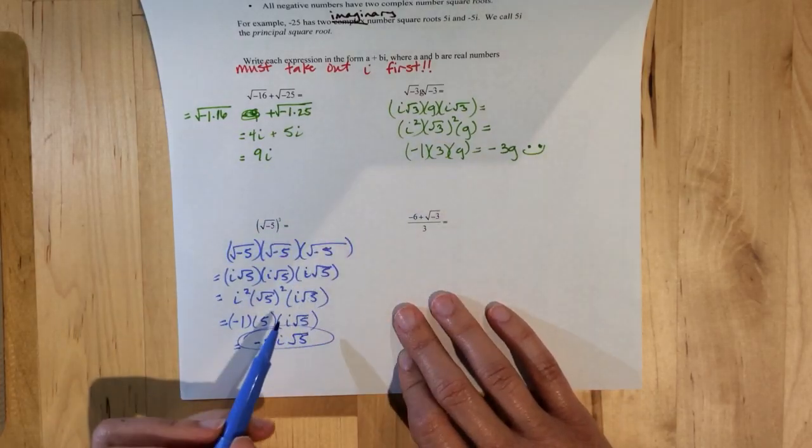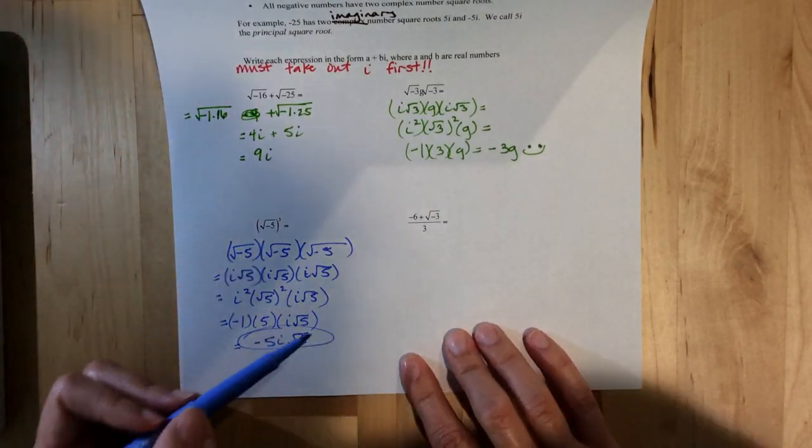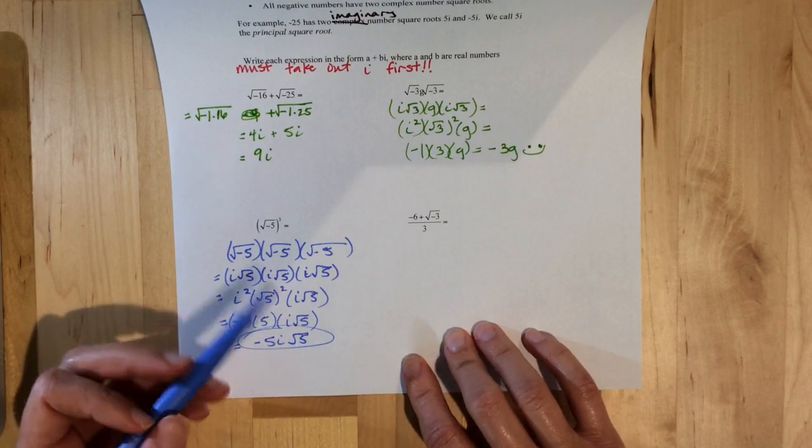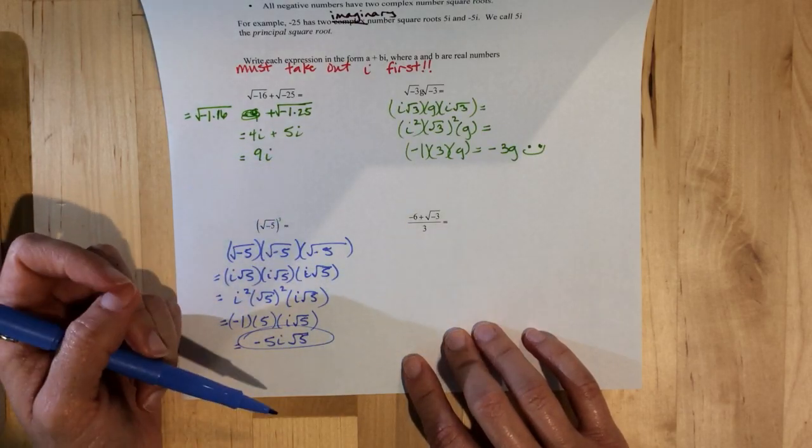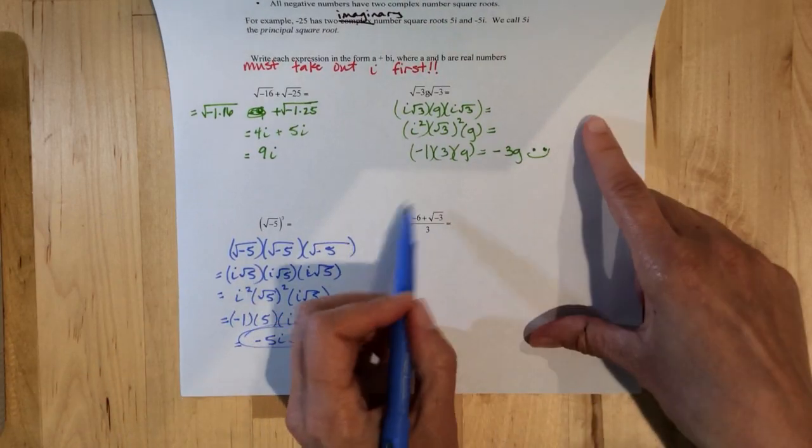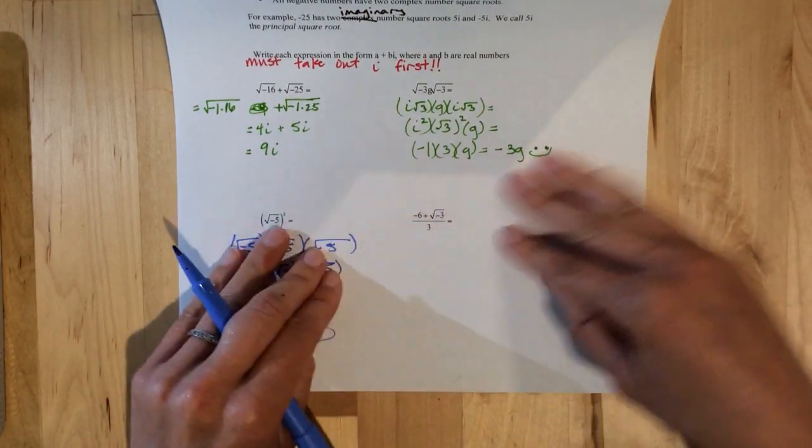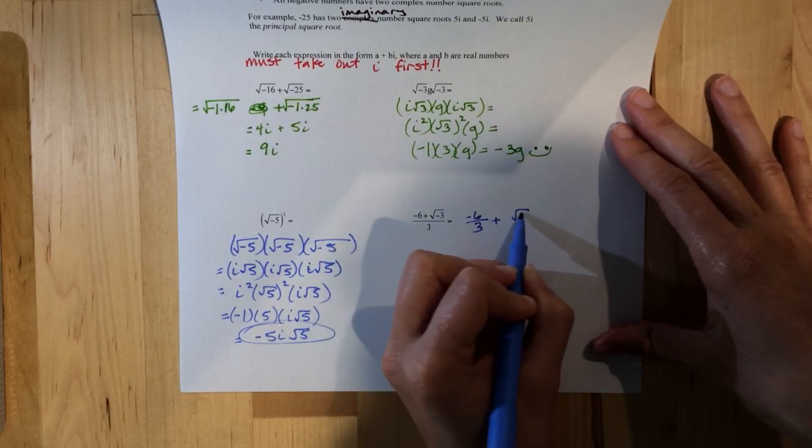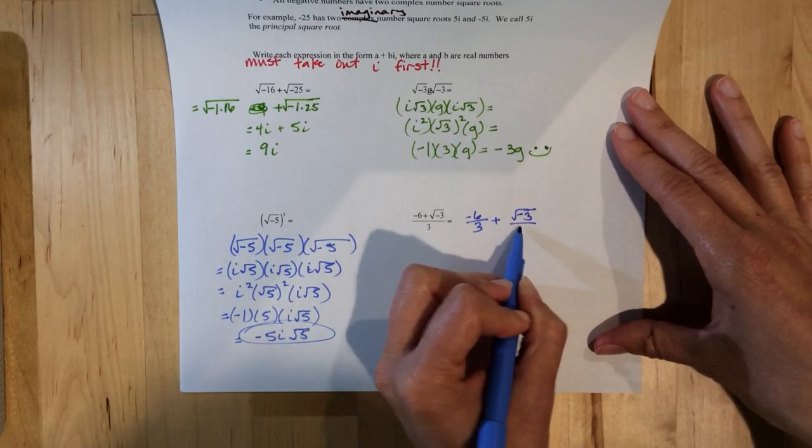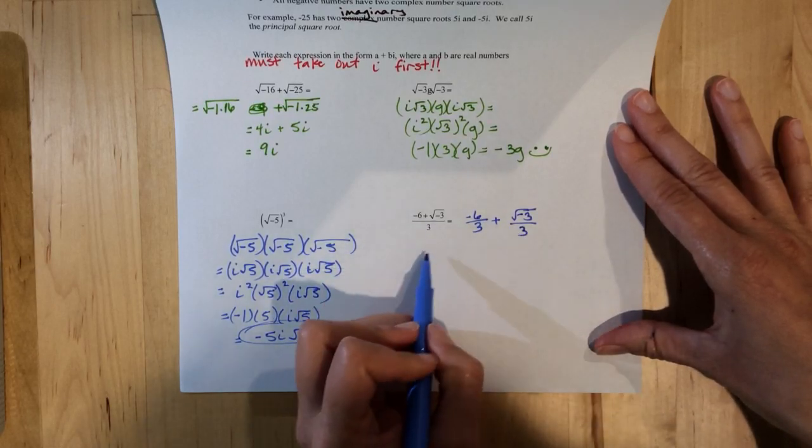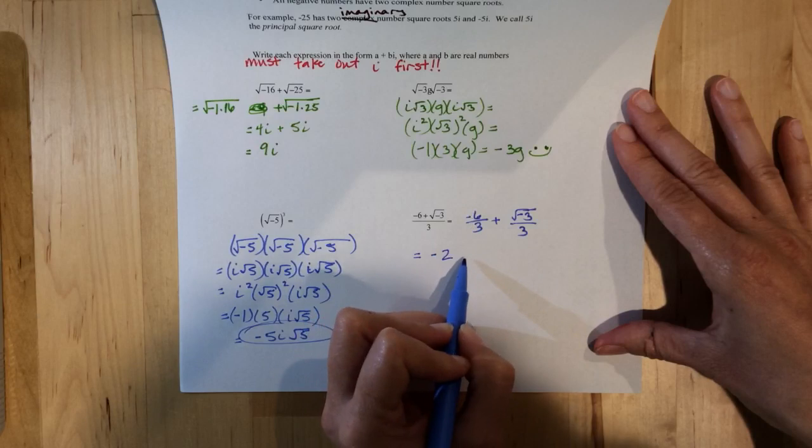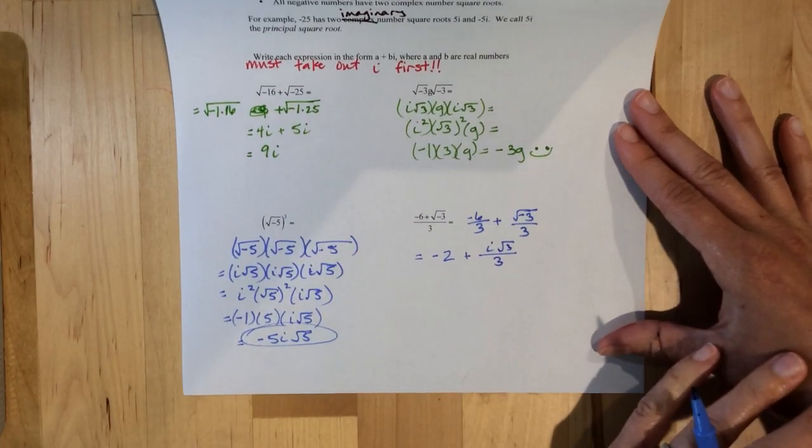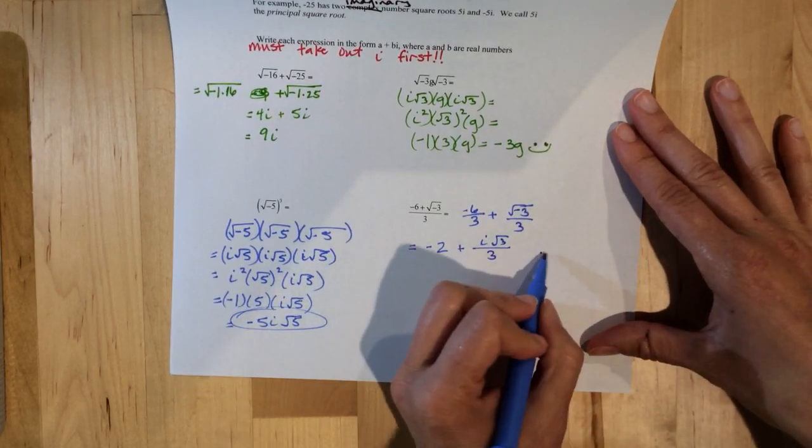And here, for all of these, since we're just simplifying, they don't have to be put into squiggly brackets or braces, because it's not an answer to anything. It's just simplifying. Now here, again, I want you to split it into two parts first. So this would be negative 6 over 3, plus root negative 3 over 3. But this is just negative 2. I'm going to pull out the i, right, because that's what we do first. And now that's all we can do. That's as far as we go.